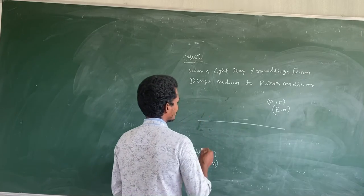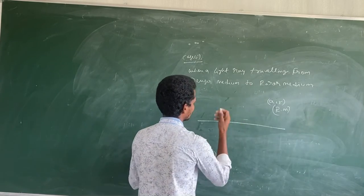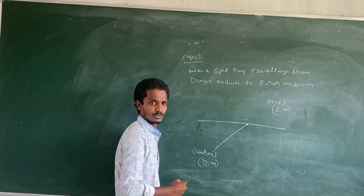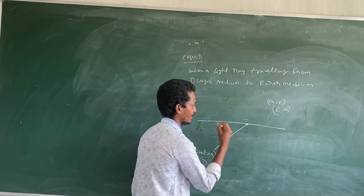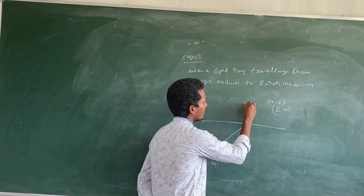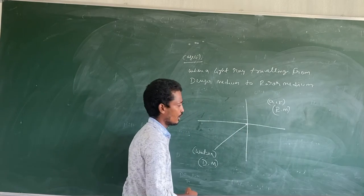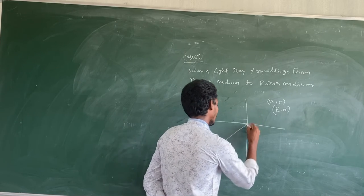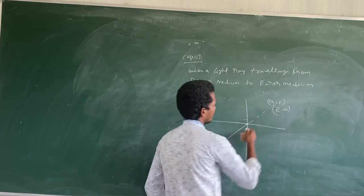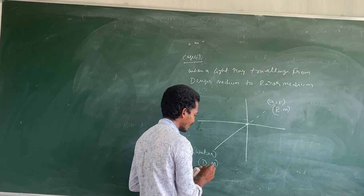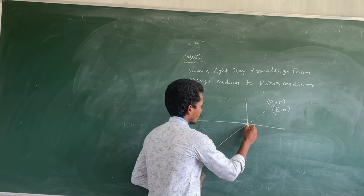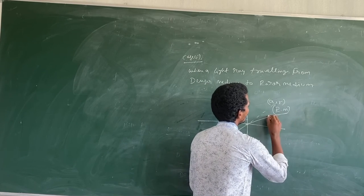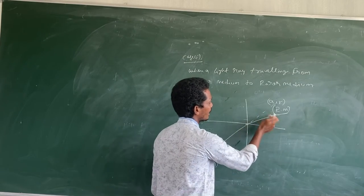Whenever the light ray is traveling from the rarer medium to the denser medium, here what's happening? When a light ray is incident on the surface, according to the laws of reflection, the normal can be formed. When light is traveling from the denser medium to the rarer medium, the light ray bends away from the normal.